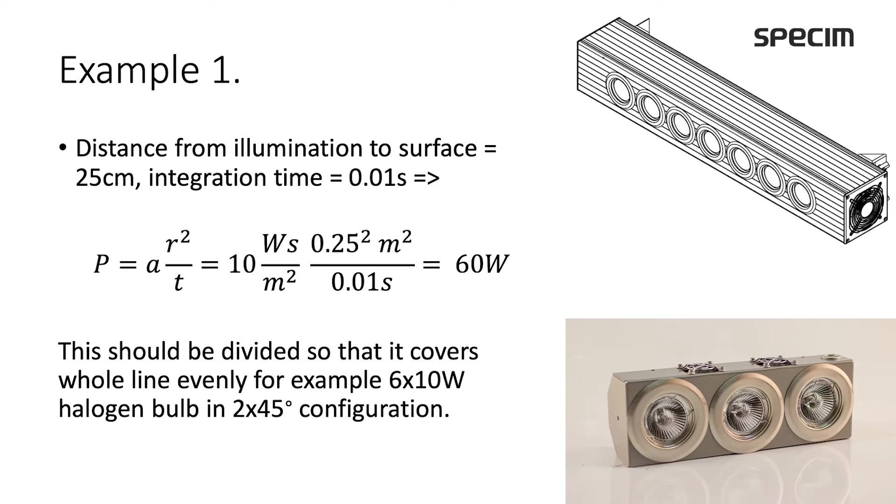And of course, when we are illuminating a line, we should divide this power so that the whole line, 20 to 30 centimeters, is covered evenly. We can achieve this illumination by using six halogen lamps with the power of 10 watts each, maybe 15 or 20 watts each, in 2 times 45 degree configuration.